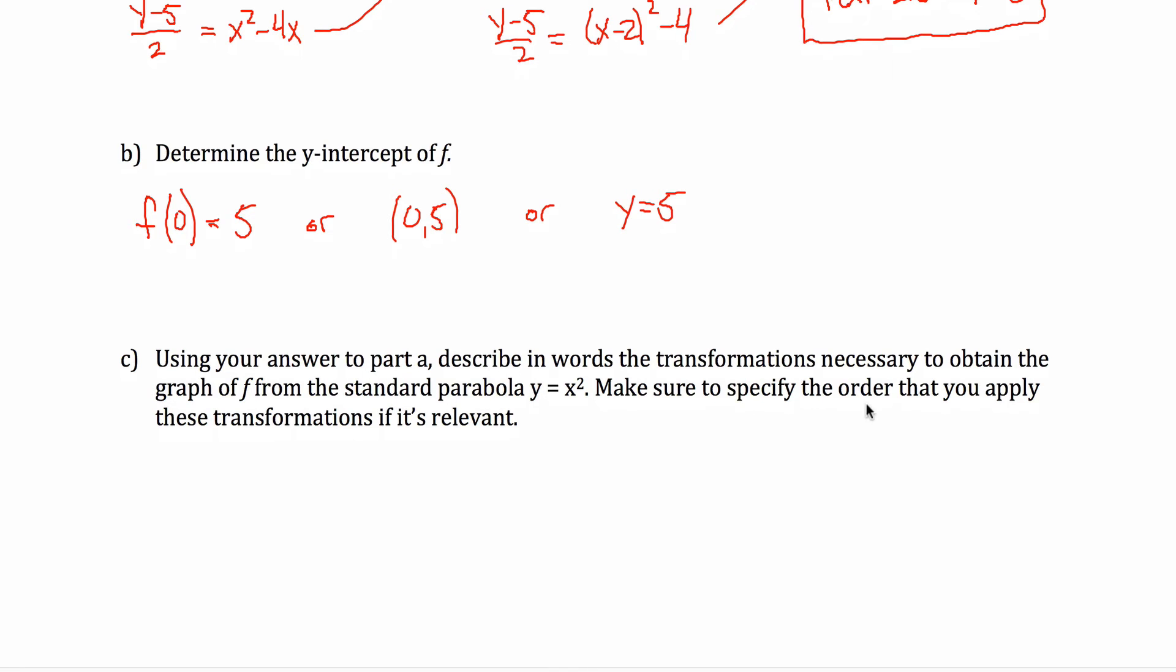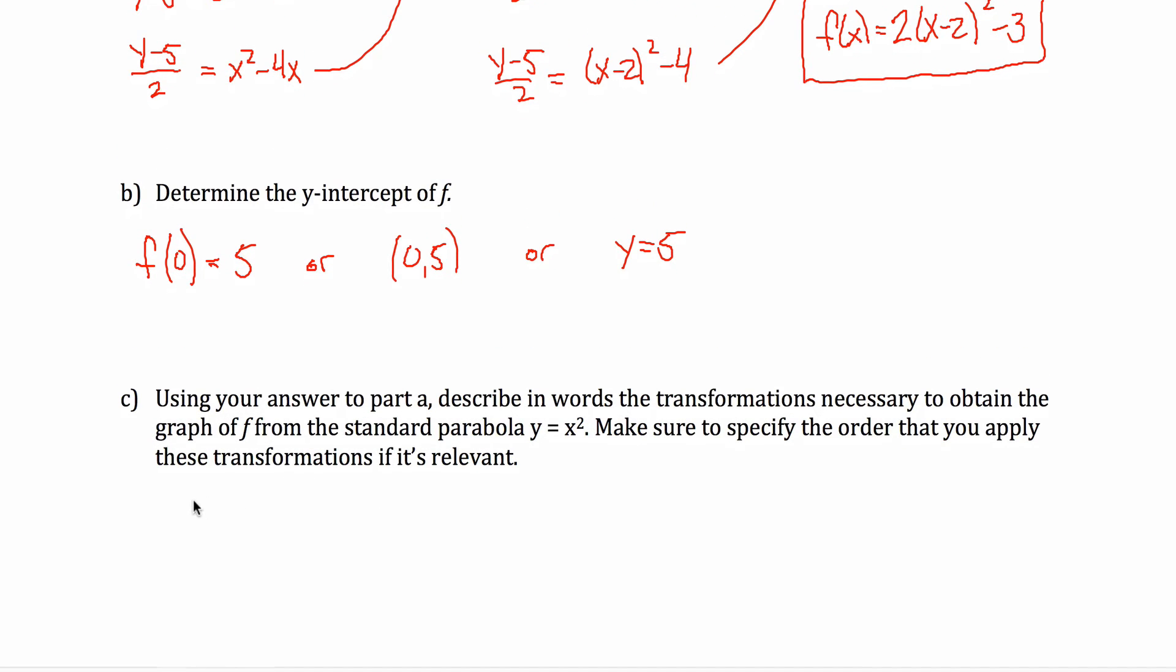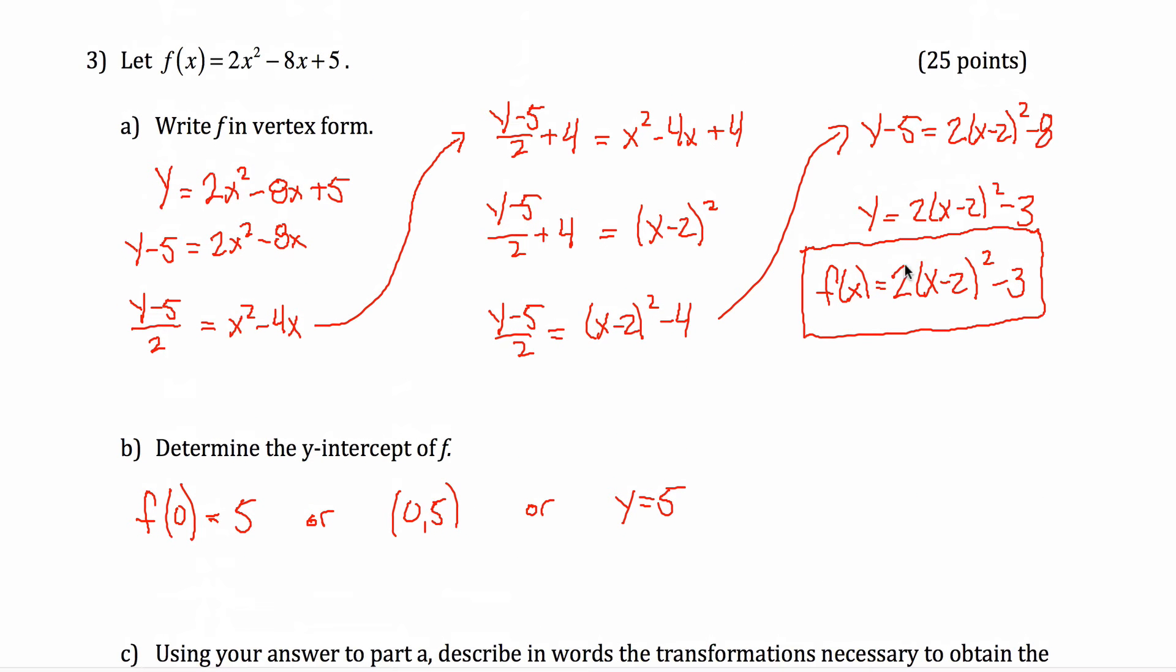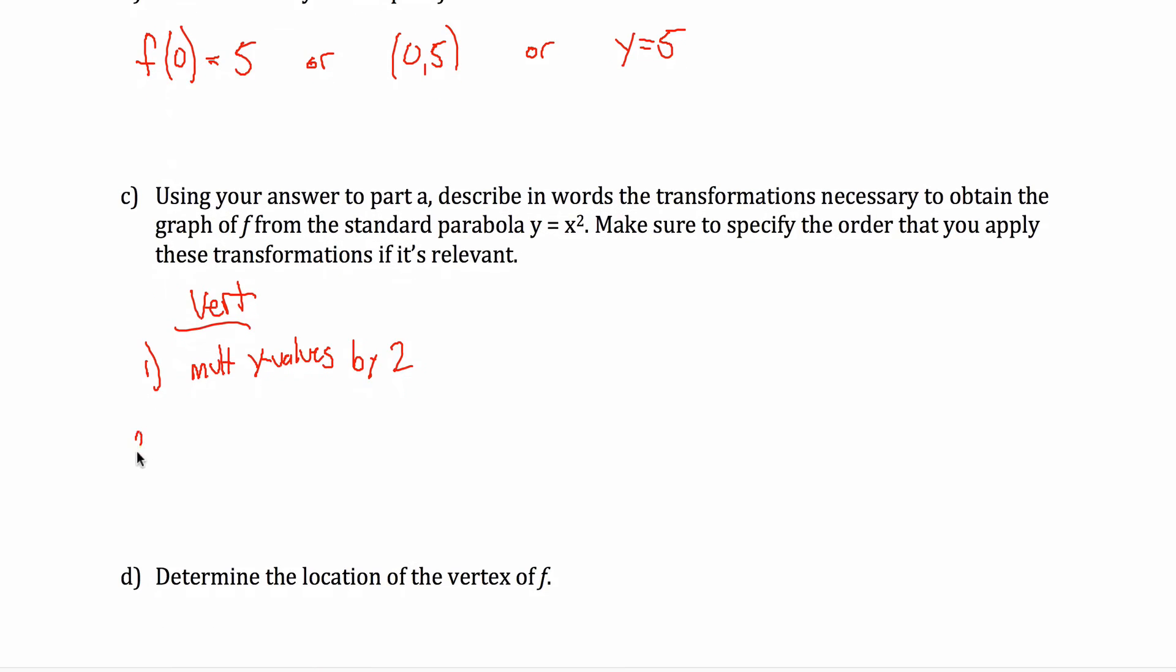Part C, using your answer to part A, describe in words the transformations necessary to obtain the graph of f from the standard parabola y equals x squared. Make sure to specify the order that you apply these transformations if it's relevant. Yeah, it's relevant. There are three transformations going on here. There are two vertical transformations. First, I want to apply the vertical transformation that corresponds with this 2. Because we're vertical transformations, I do the multiplication first. So first, I want to multiply the y values by 2. And again, that's for this 2 right here. Then I want to subtract 3 from the y values. And as we talked about in class, you can also describe these as I'm going to stretch my graph vertically by a factor of 2. And I'm going to shift my graph down by 3 units. I think it's easier to use words like multiply, subtract, add, that kind of stuff. But it's up to you.